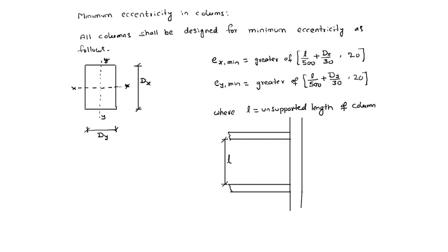This is L, the unsupported length of the column, slab to slab. So L by 500 plus lateral dimension by 30, or 20, whichever is maximum, is the minimum eccentricity to be adopted in column design.